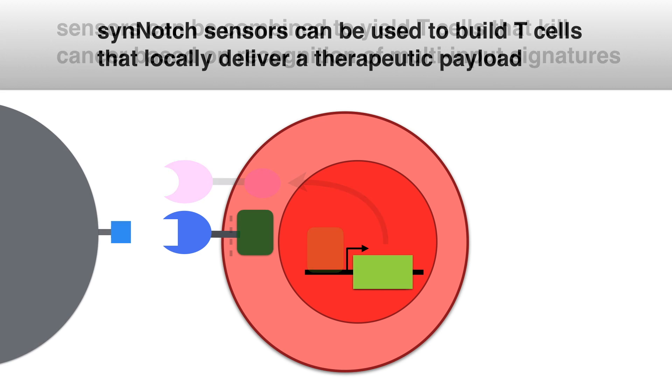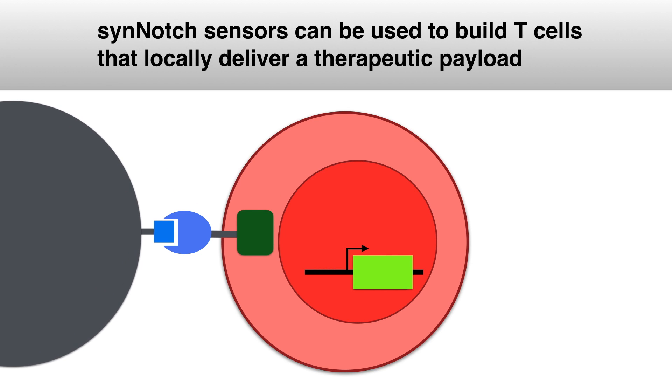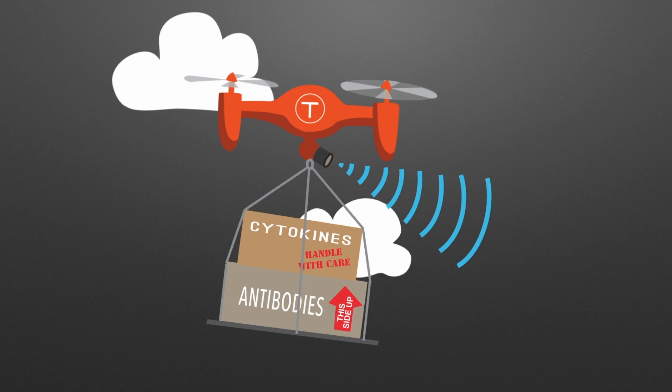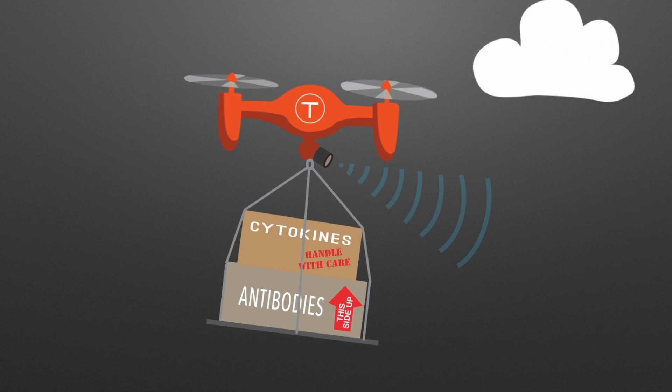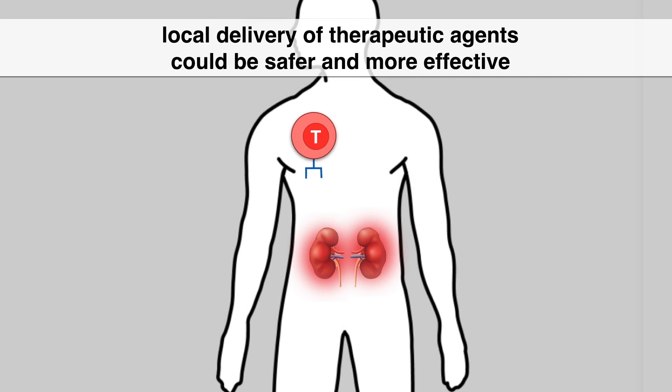Now we have shown that SynNotch sensors can be used to engineer T-cells that locally deliver a therapeutic payload, including drugs such as antibodies or cytokines. Local delivery of these powerful therapeutic agents could be safer and more effective.